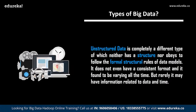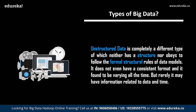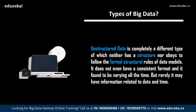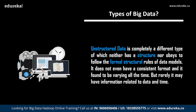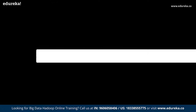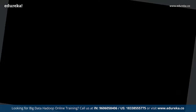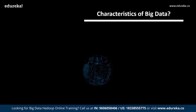Unstructured data does not even have a consistent format and it is found to be varying all the time, but rarely it may have information related to data such as date and time. The simplest examples of unstructured data are audio files, images, videos, etc. Now we shall move ahead into the actual topic for today's discussion — the characteristics of big data.